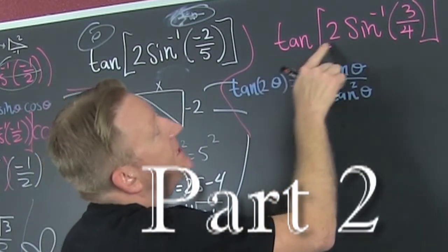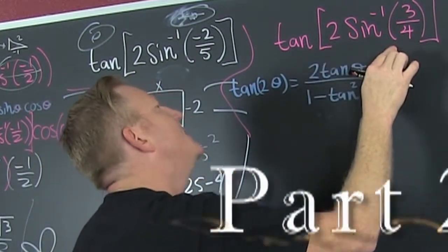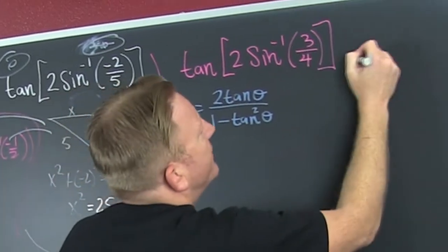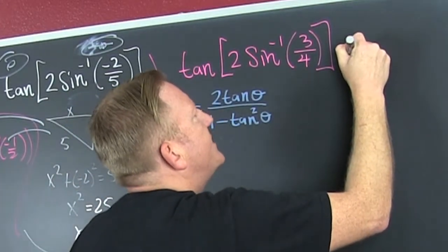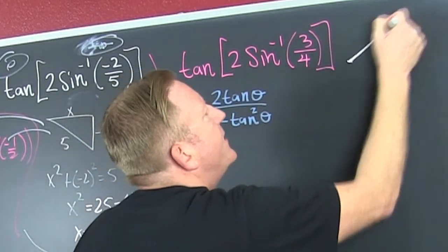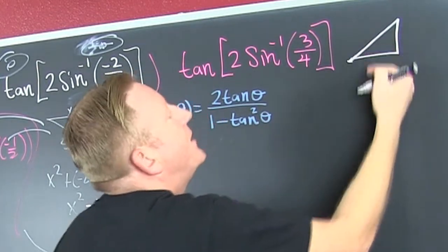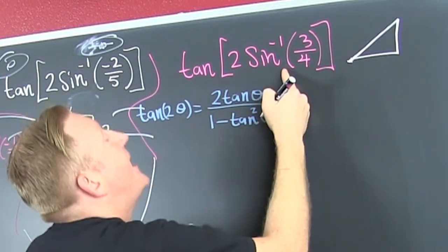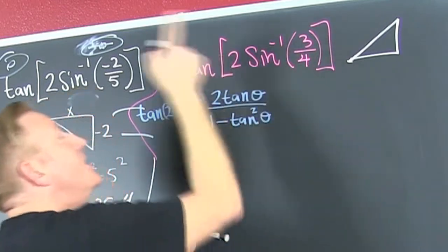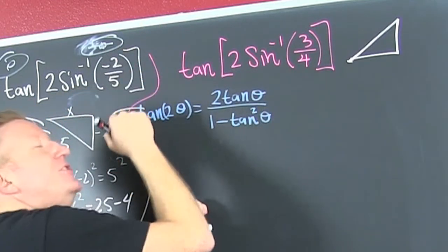So then we're going to look at this piece. We're looking at the tangent of 2 times the inverse sine of 3 fourths. Now, what's that going to get you? That is going to get you a triangle in the first quadrant or the fourth quadrant, because you're doing the inverse sine, and that's its restricted domain, but could you have it over on the other side? Sure.